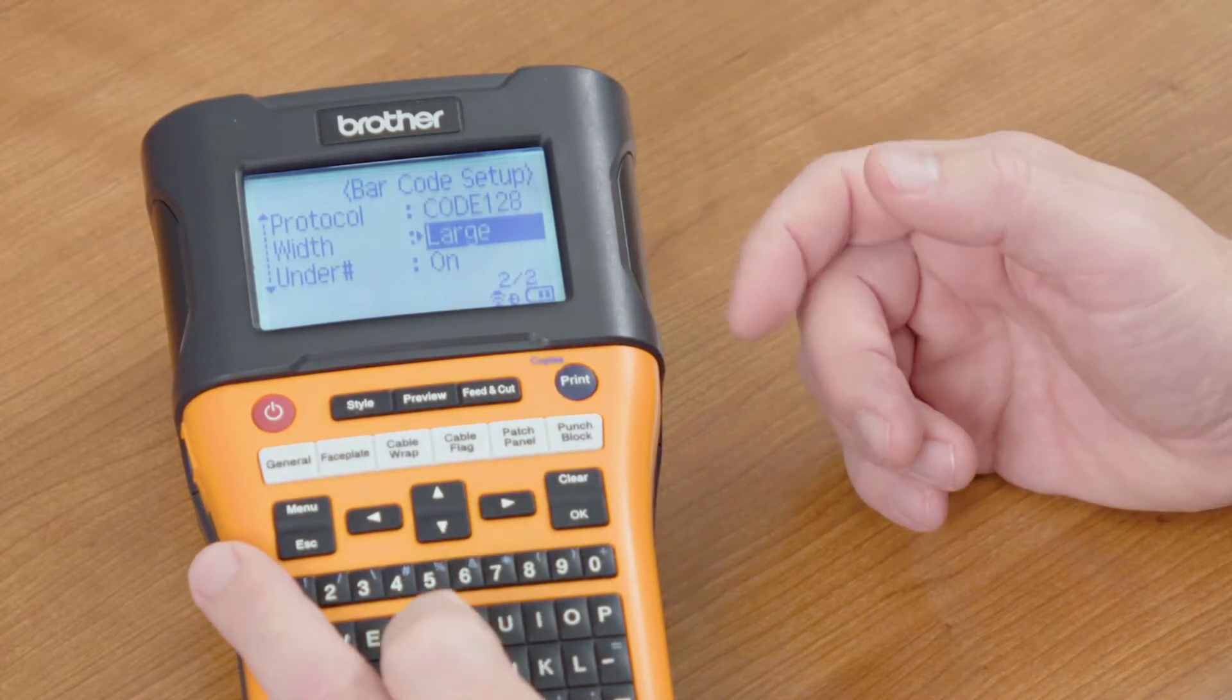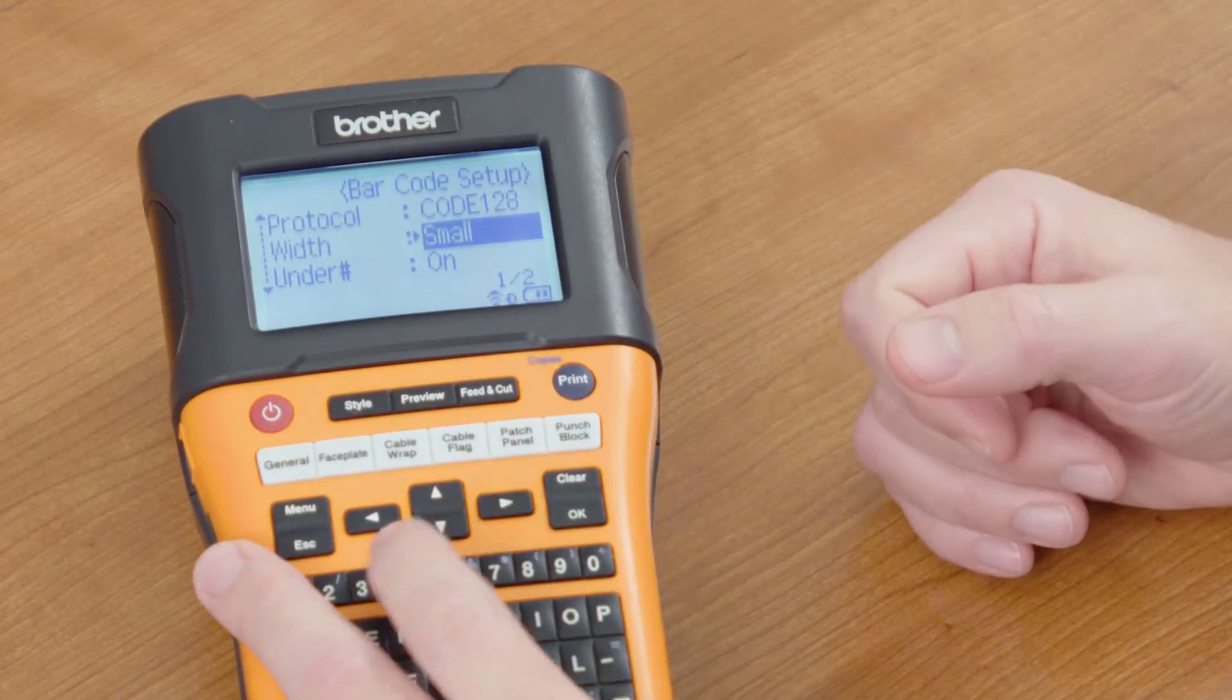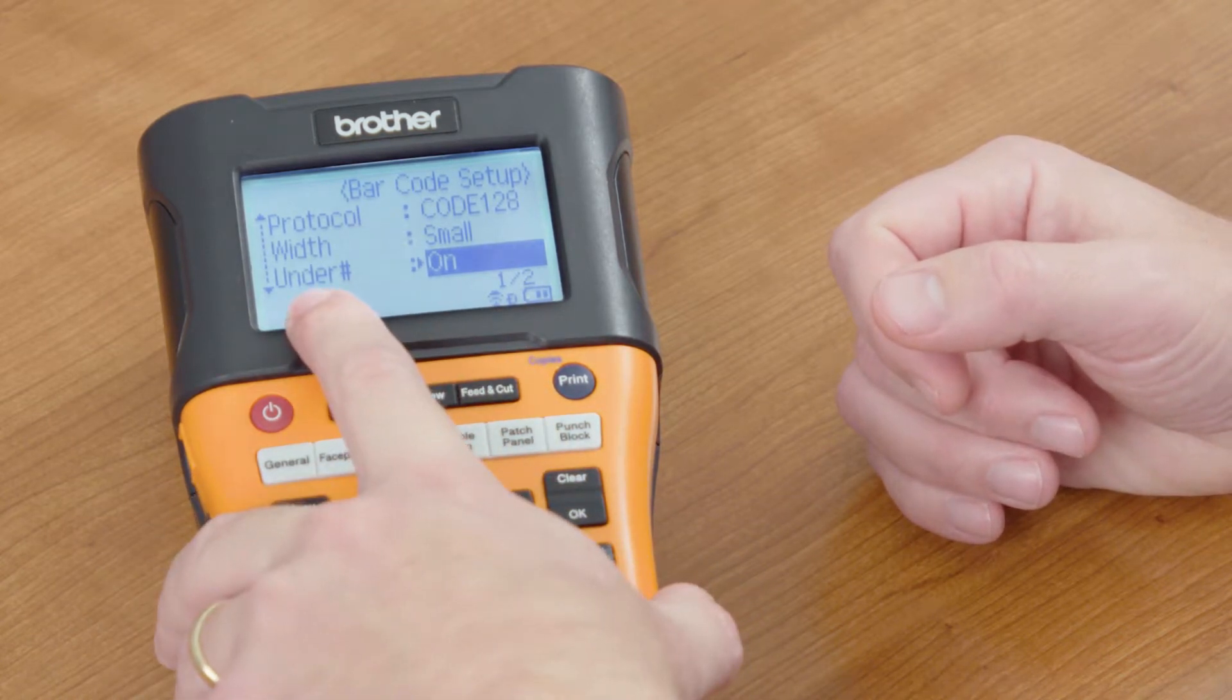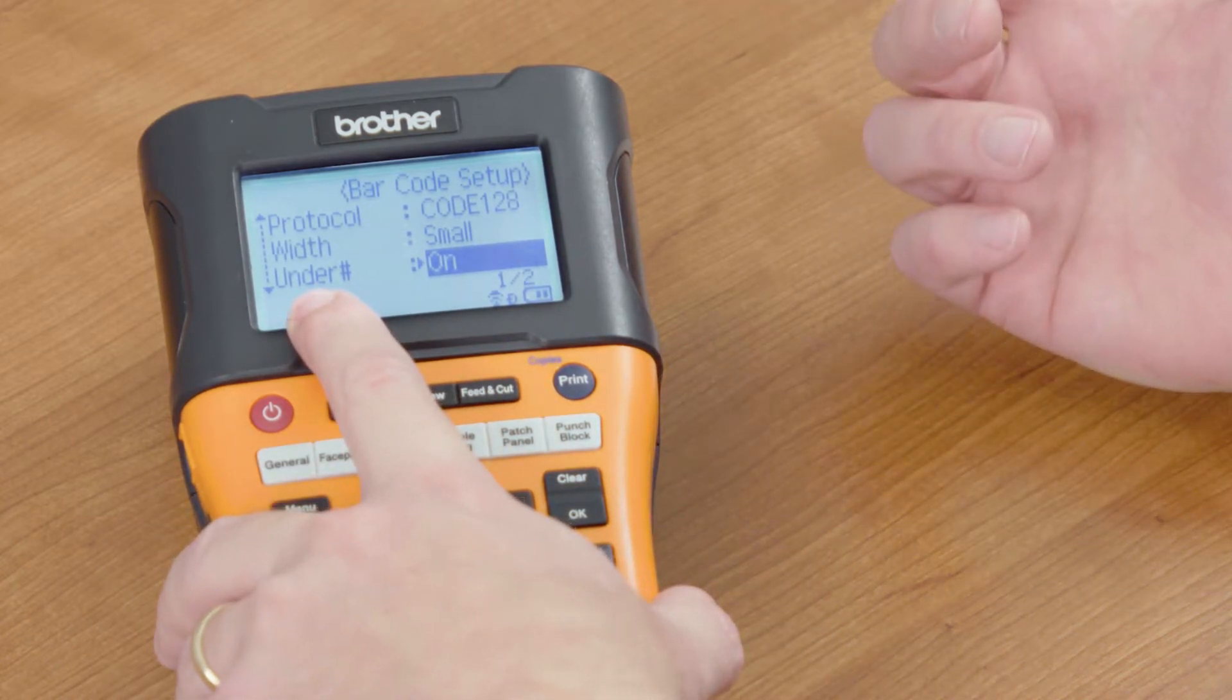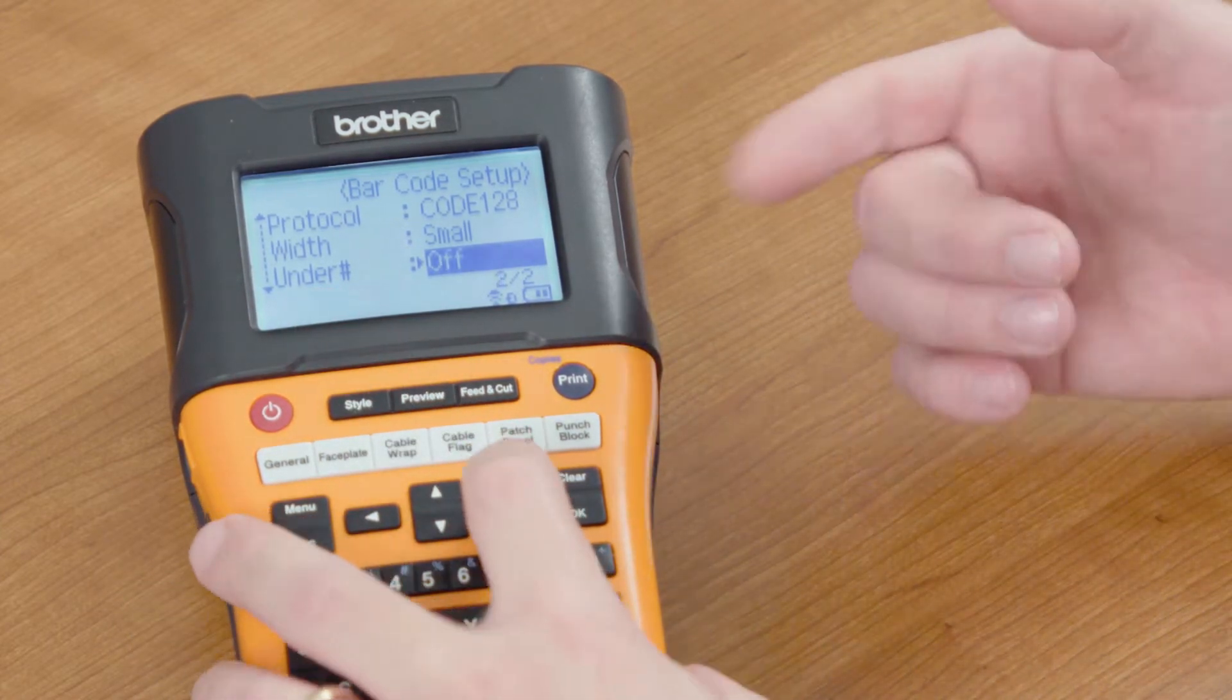Next it asks, do you want a large barcode or a small barcode? Answer that question and then move down to the next question. It says, do you want the part number or whatever you're barcoding underneath the barcode, or do you not want it on the barcode?